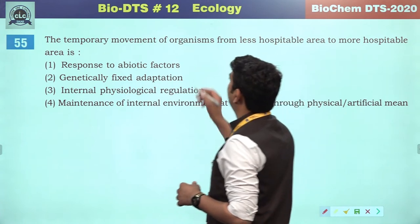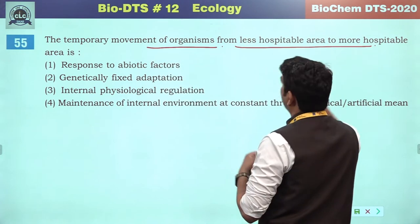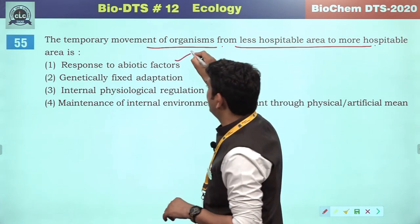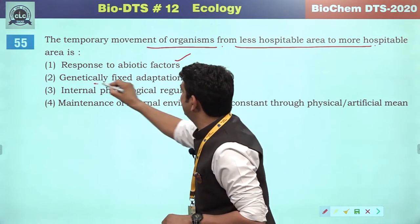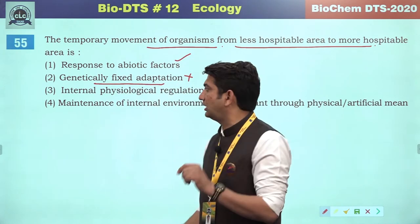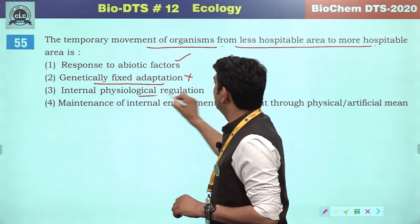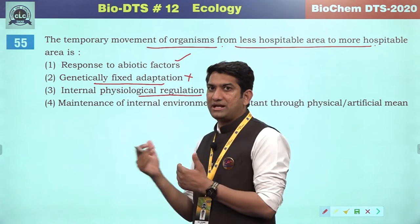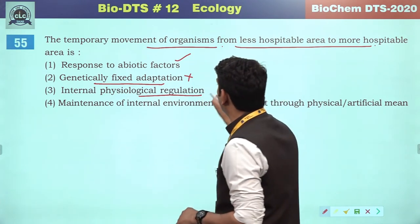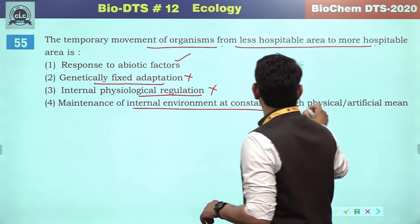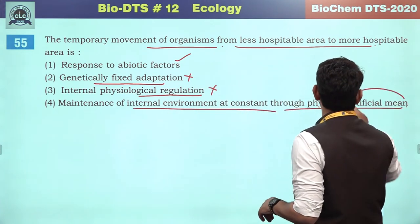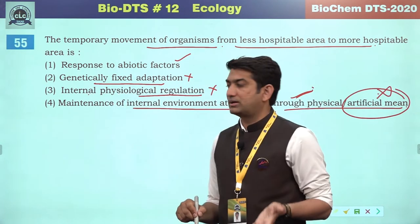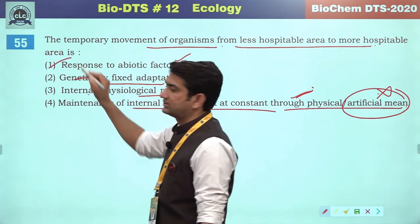The temporary movement of organism from a less hospitable area to a more hospitable area is a response to abiotic factors. Genetically fixed adaptation — adaptations may be fixed genetically but not all, so incorrect. Internal physiological regulation — if a regulatory capability existed, there would be no need to move from less hospitable to more hospitable area. So the correct answer will be the first option.